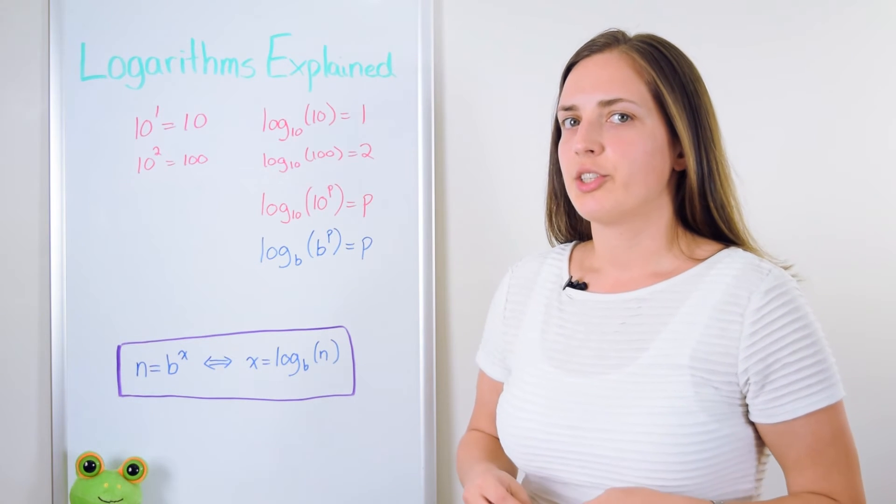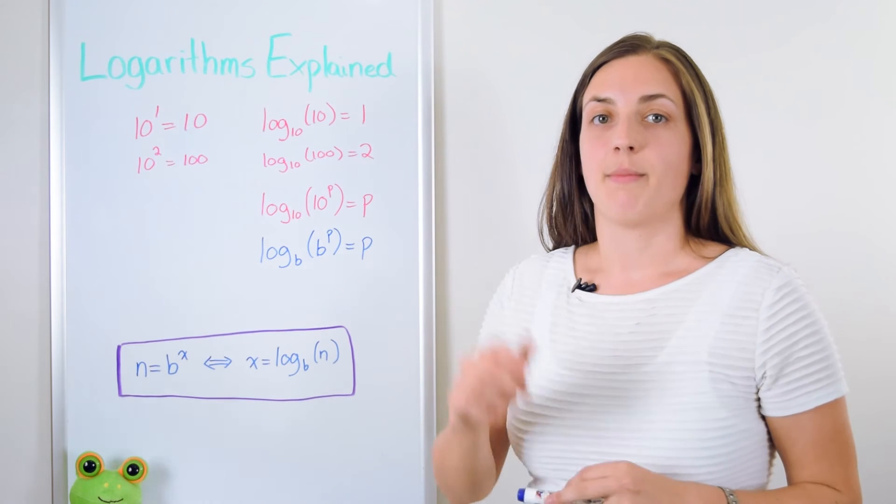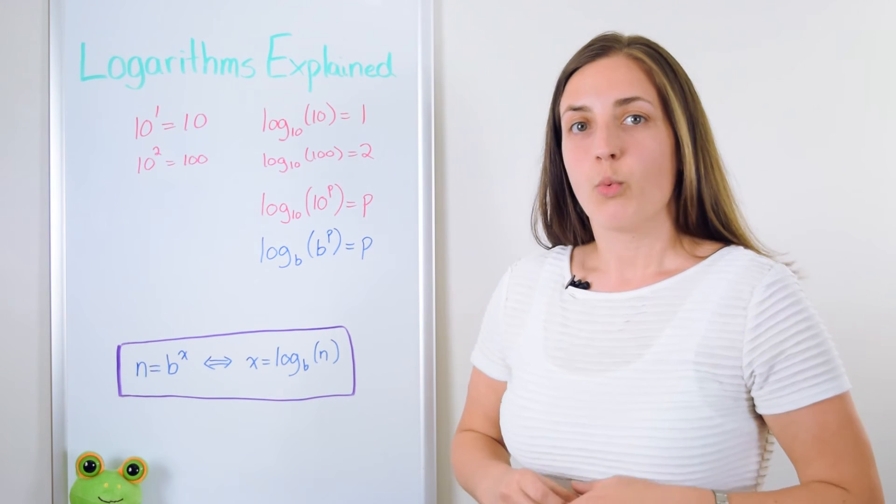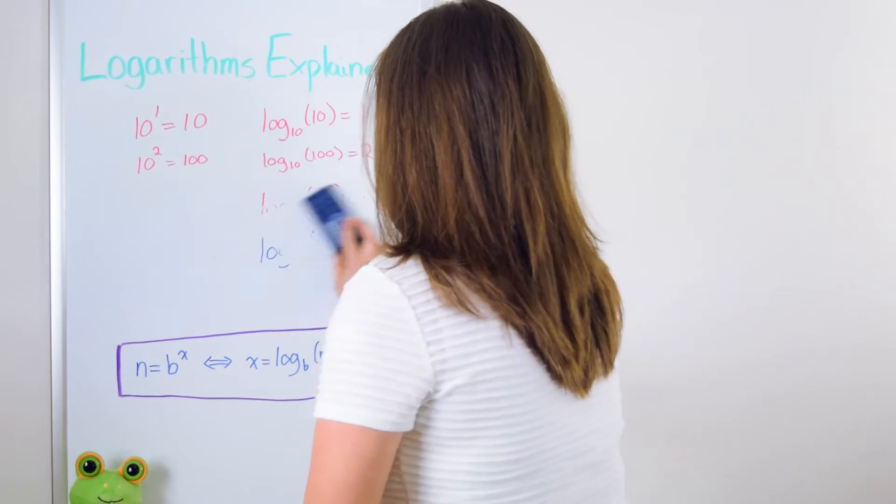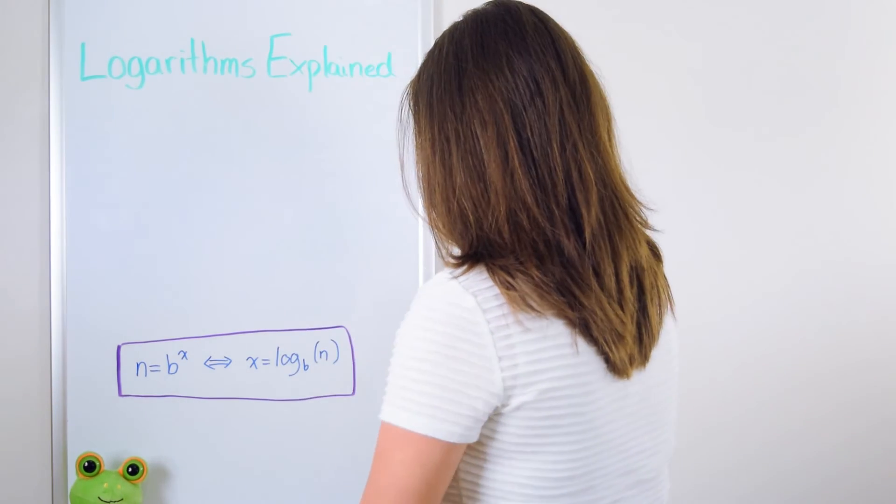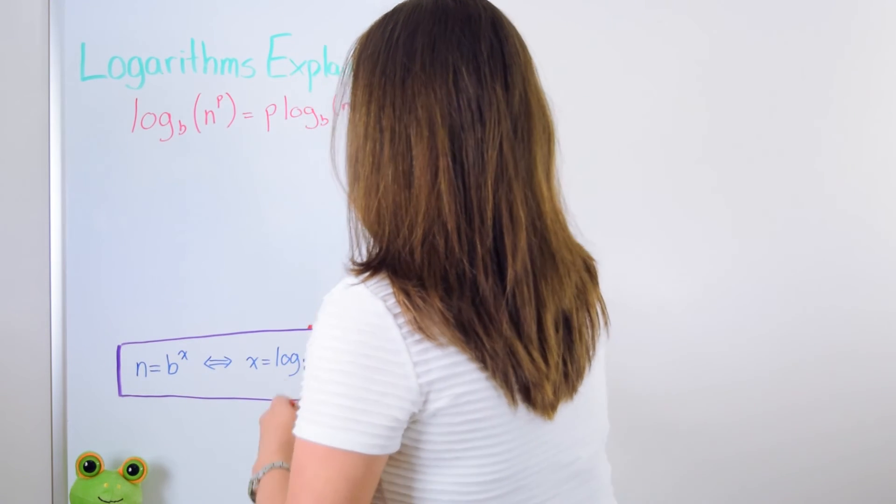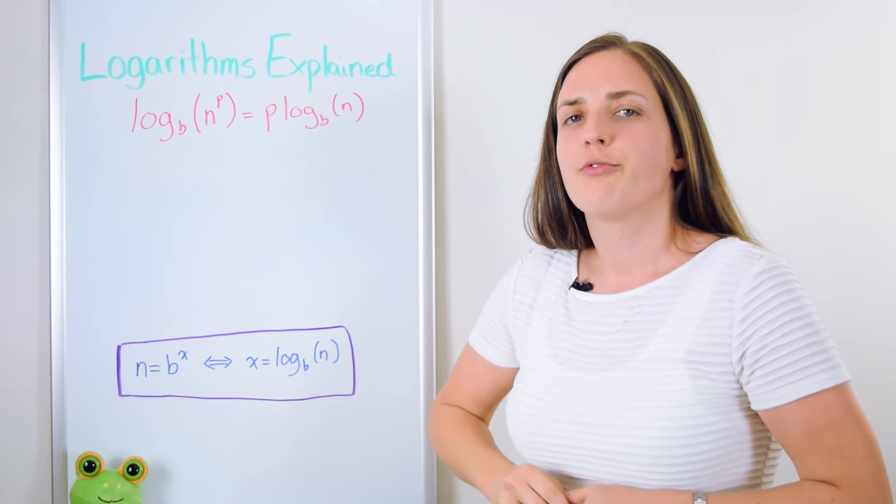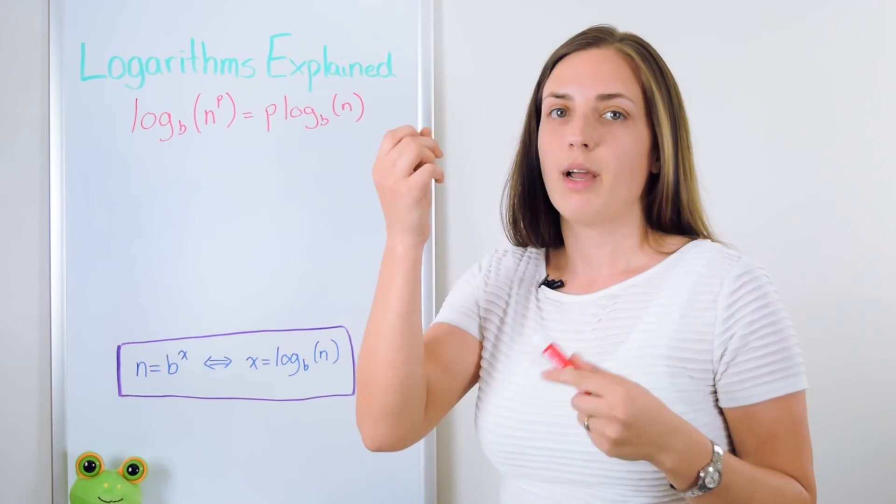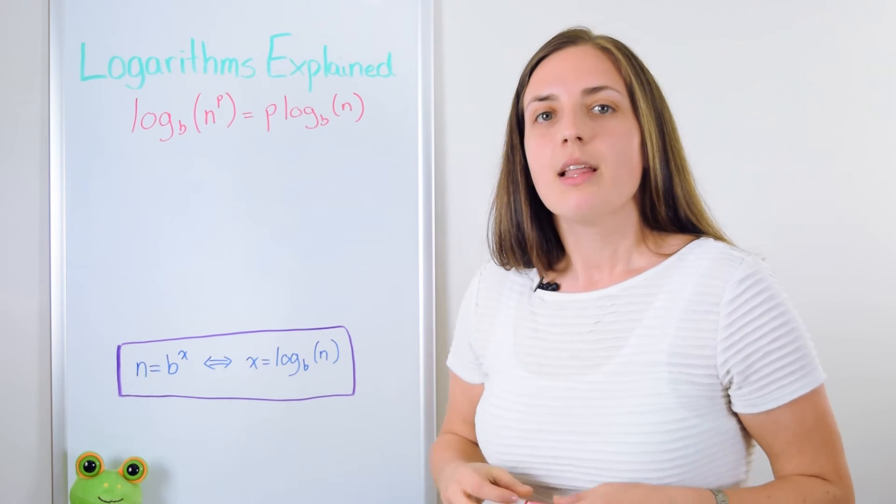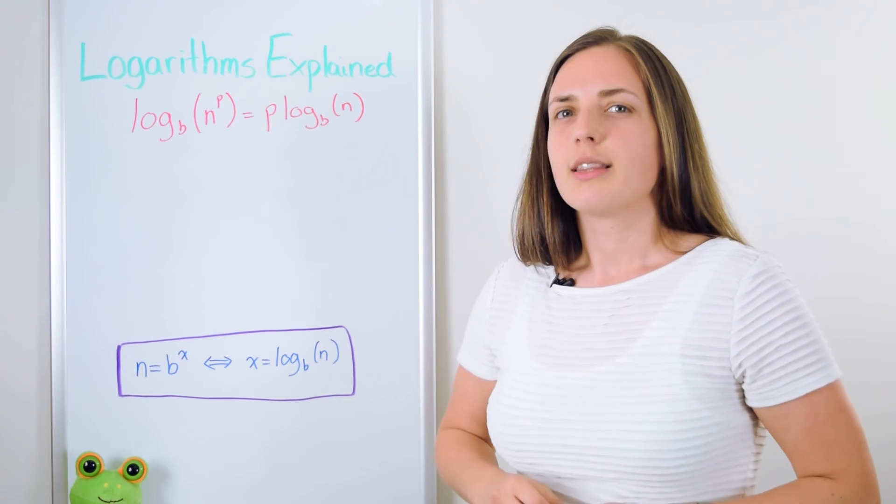You may wonder what are you going to do if you have log base b of some other number n to the power of p where n is not the same as b. What are you going to do then? Well we still have a nice rule that we can use and I can show you why it works. If you're looking for the logarithm in base b of any number n to a power p, I'm using p because it helps me to remember that it's a power, that's equal to p times the logarithm in base b of n. Well why is that true? Let's work it out.